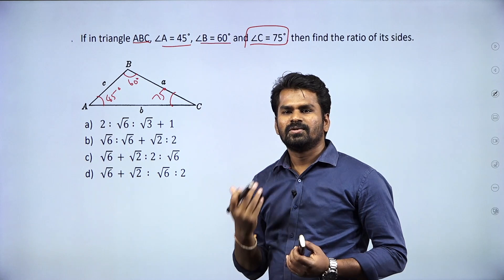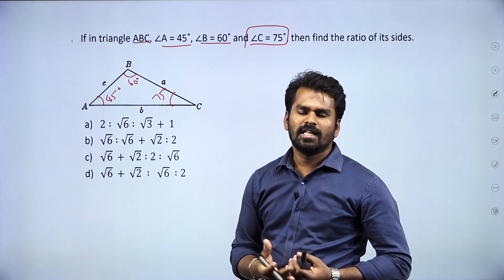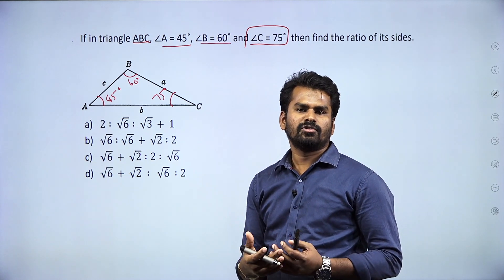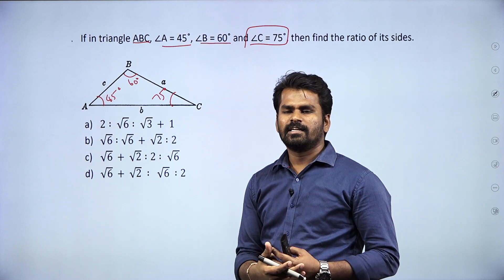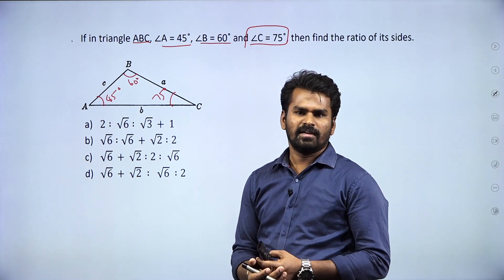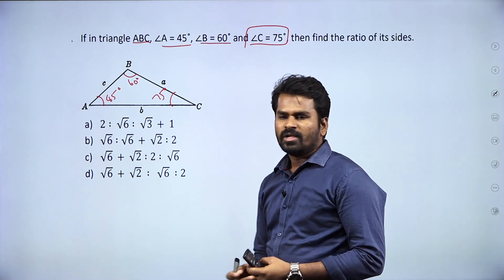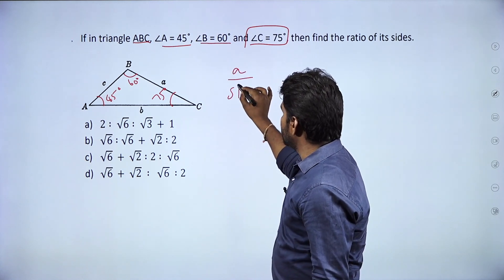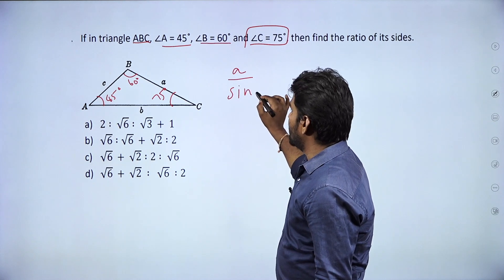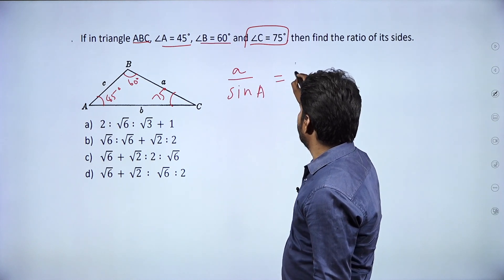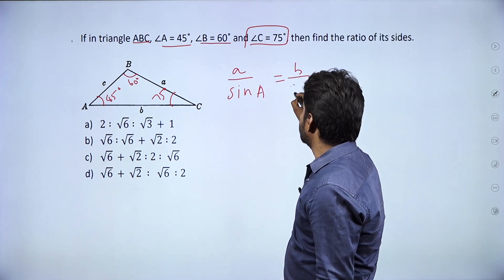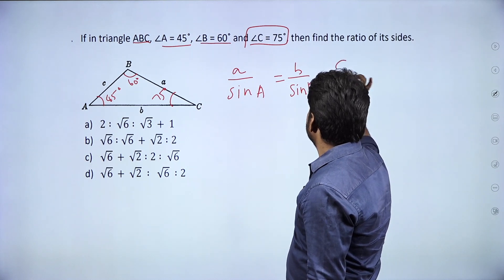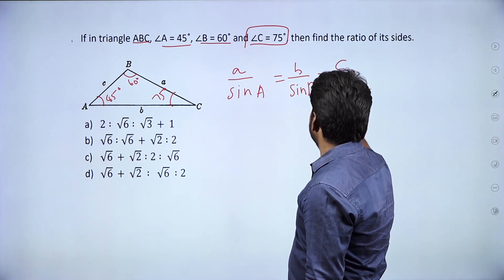We can use either the cosine rule or the sine rule. The sine rule is very easy. The sine rule states: a divided by sin A equals b divided by sin B equals c divided by sin C.